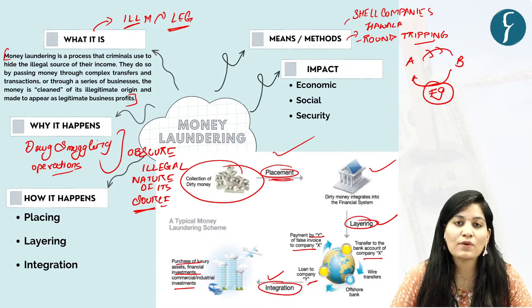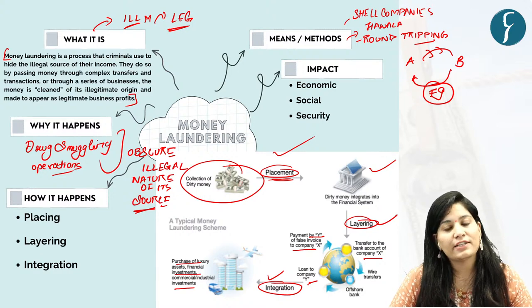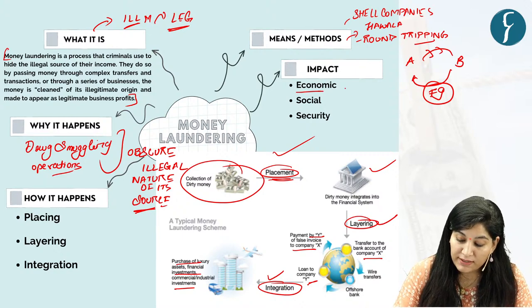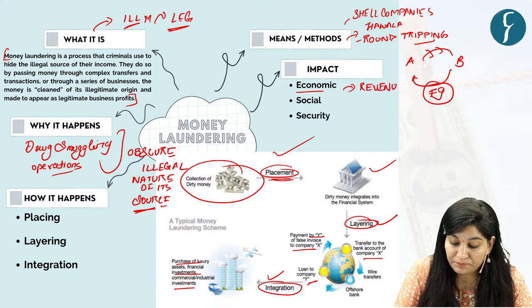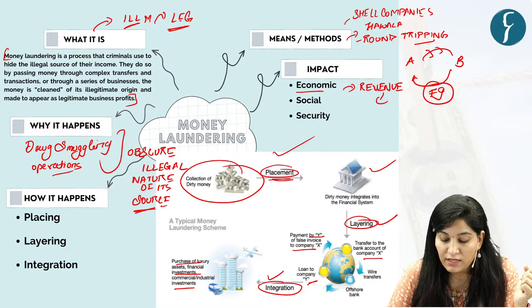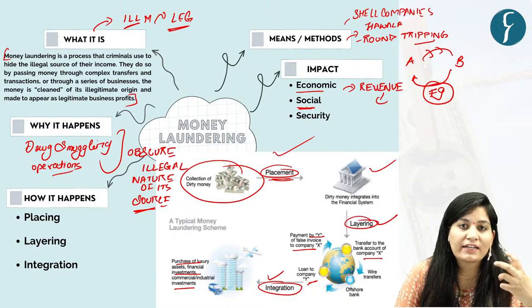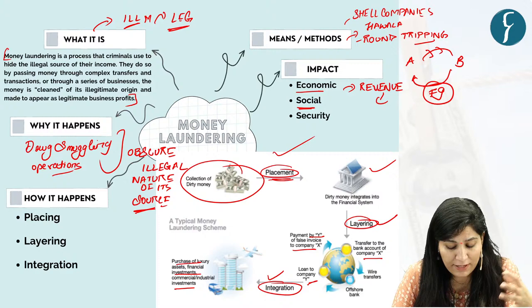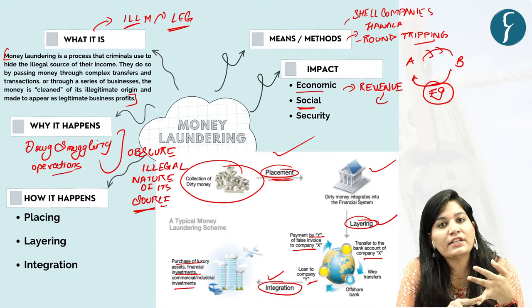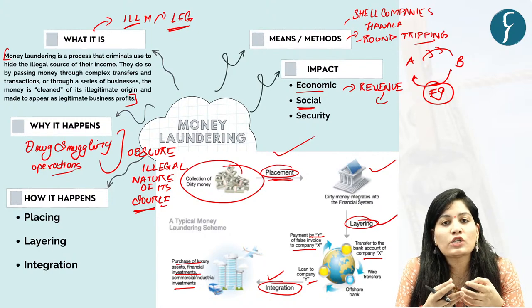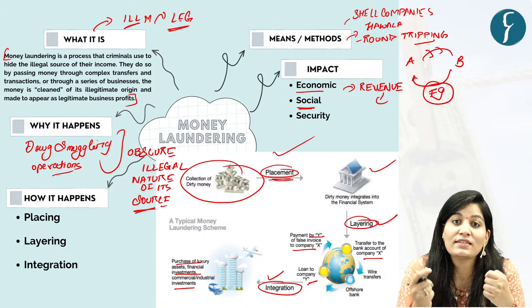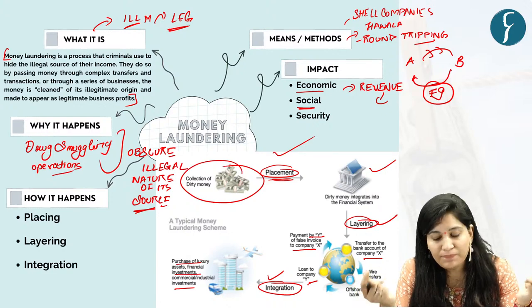The impact of converting illegitimate money into legitimate money will obviously have adverse effects. On the economic front, it will impact the revenue of a country due to tax and duty evasion and will also affect the credible governance system adversely. On the social front, criminals assume huge resources at their disposal, giving rise to illegal activities like increased drug addiction, rampant corruption, and criminals assuming economical as well as political power.